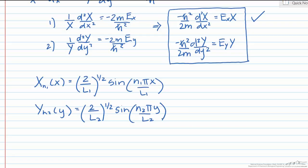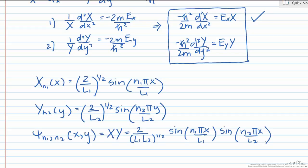We know that psi is just the product of x and y, so by multiplying these two functions together, we get our overall normalized solution to the two-dimensional particle in a box.